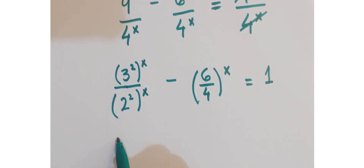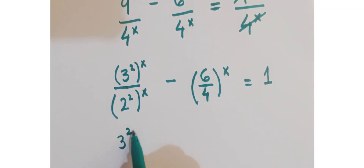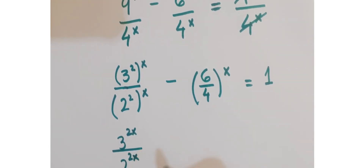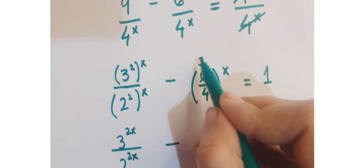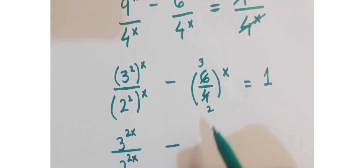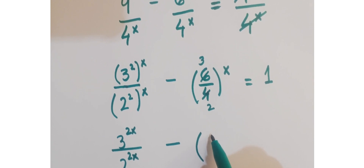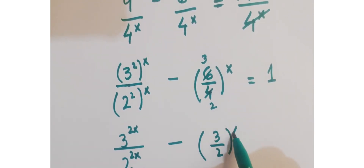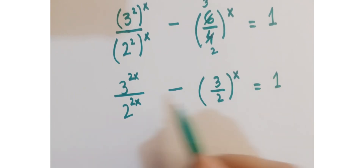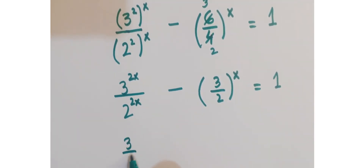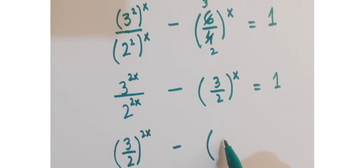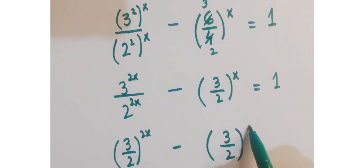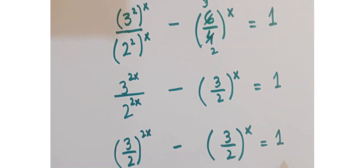Further, you can write this as 3 to the power 2x upon 2 to the power 2x, minus — doing the cancellation here, this is 3 times and this is 2 times 2 — so this is 3 upon 2 whole to the power x equals 1. Further, you can write this as 3 upon 2 whole to the power 2x minus 3 upon 2 whole to the power x equals 1.